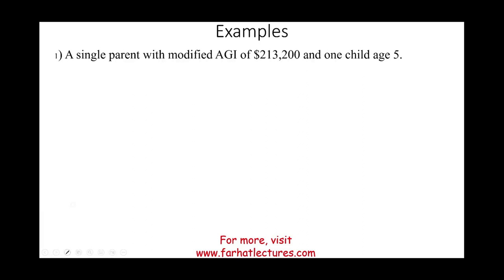Generally speaking, the amount of the credit is $2,000. However, since this is a single filer, we will be subject to the limitation. Anything other than married filing jointly, you have to start cutting down on this credit above $200,000. The individual has a modified adjusted gross income of $213,200, which is $13,200 above the threshold. We round up $13,200 divided by $1,000 — that's 13.2 — so we round up to 14. We are 14 multiples of $1,000 above the threshold.